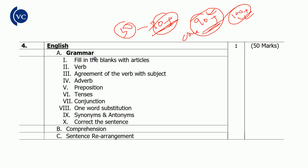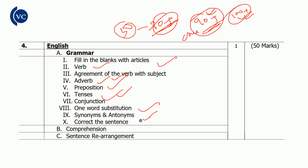The English grammar syllabus includes fill in the blanks, articles, verbs, agreement of verb with subject, adverb, preposition, tenses, conjunction, one-word substitution, synonyms, comprehension, and sentence arrangement. In total, English carries 50 marks.